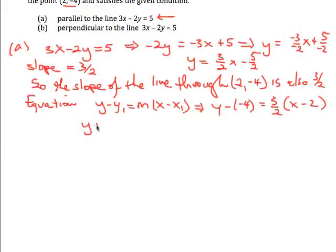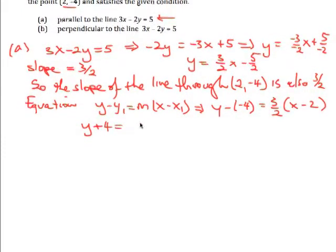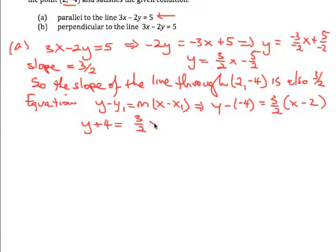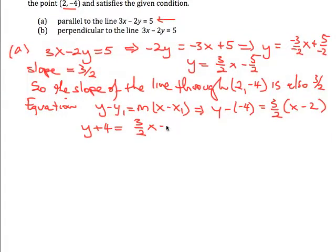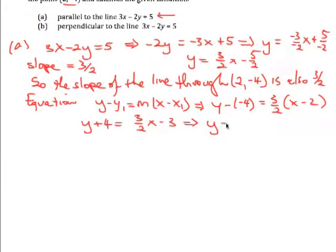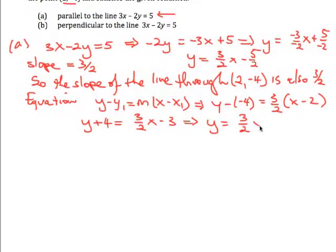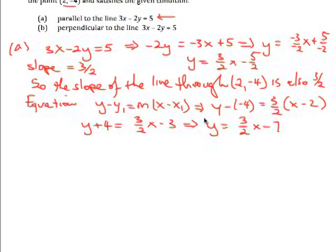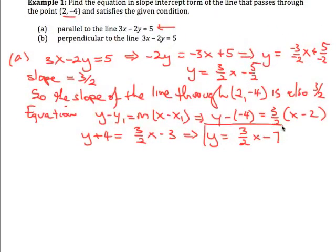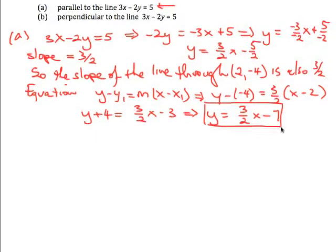So in other words, y plus 4 is equal to 3/2x, and 3/2 times -2 is going to be -3, which implies then that y is equal to 3/2x, and we're subtracting 4 from both sides minus 7, and so this would be the equation of my line.